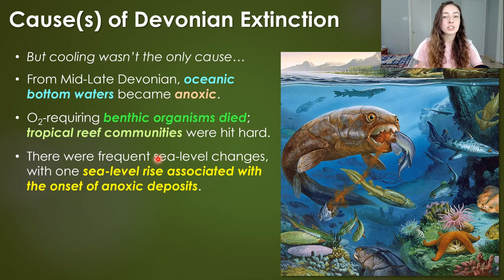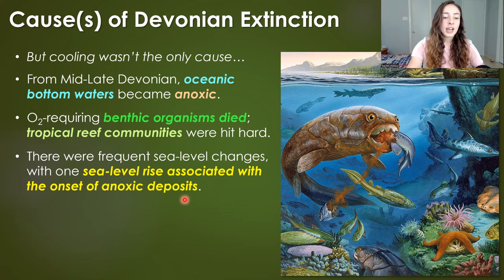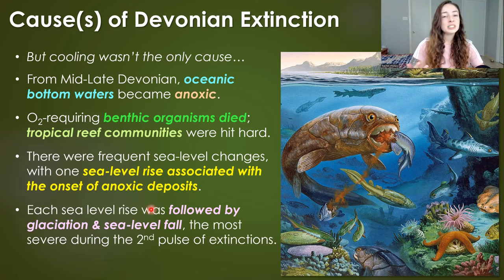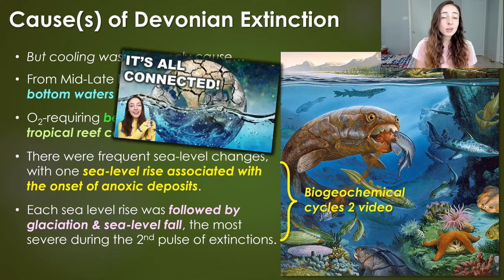In addition, there were frequent sea level changes, which in and of themselves would have been devastating to many species, especially those that lived on epicontinental seas that disappeared when sea level fell. One of the sea level rises was associated with the onset of anoxic deposition, and each sea level rise was then followed by glaciation and sea level fall — the most severe of which was during that second pulse of extinctions, when glaciation increased quite a bit toward the equator.